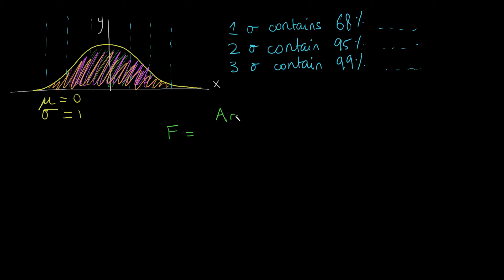So the fraction of the area is equal to the area of the bell curve within your region, so area within, and you're going to, as always, just divide this by total area.